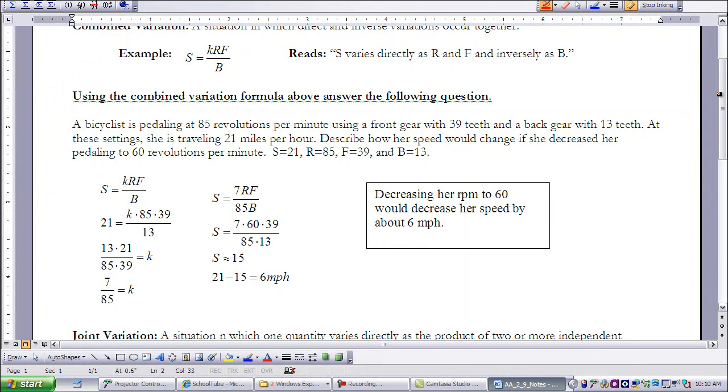And now we can insert 60, because we're looking at what would happen if she decreased her pedaling to 60 revolutions per minute. So the gear is staying the same, but the revolutions is the thing that's changing. So we're changing R to 60.